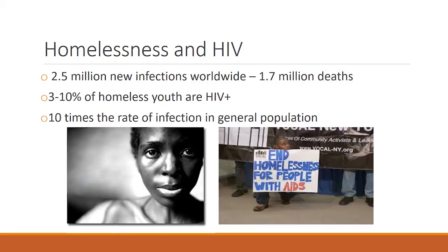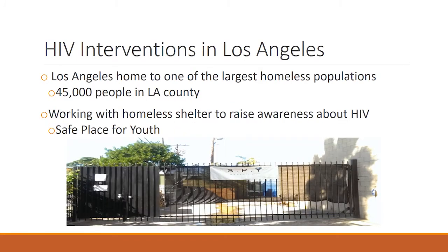As you all know, HIV is a very dangerous disease. Every year, almost 2.5 million new people get infected with HIV, and it results in 1.7 million deaths. It's an even bigger problem amongst homeless youth, as almost 3 to 10% of homeless people are HIV positive — 10 times the rate of infection in the general population. Specifically, Los Angeles, where we are based, is home to one of the largest homeless populations in the country, with over 45,000 homeless people in LA County. Over the past four years, we've been working with homeless shelters in Los Angeles to raise awareness about HIV amongst homeless youth.